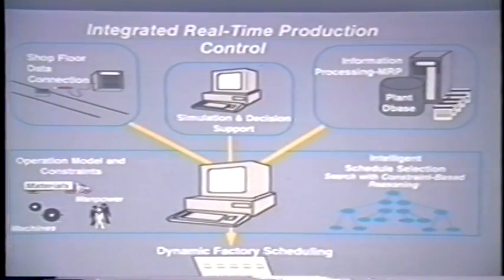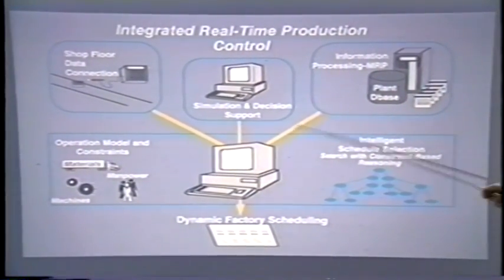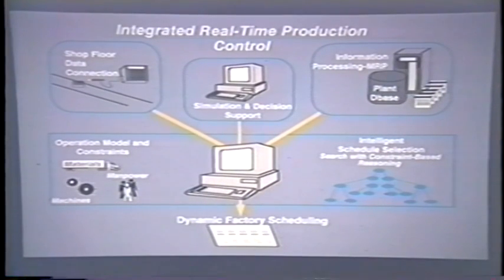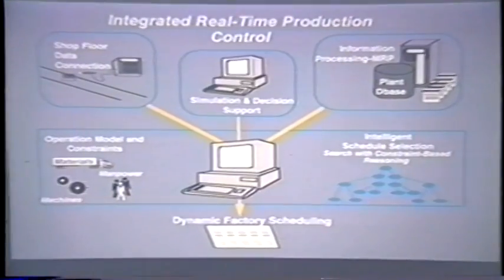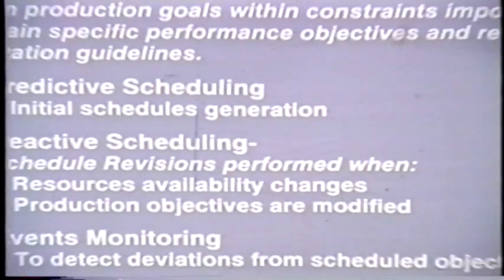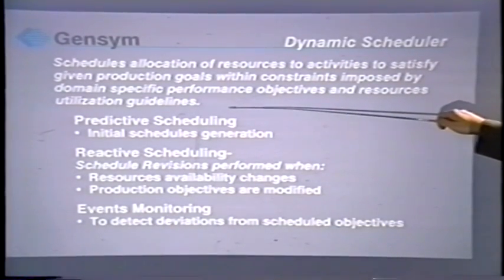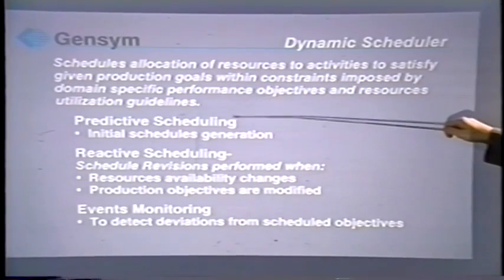Another important application for manufacturing is dynamic scheduling — tying together the MRP or information system side of a company with shop floor production control. In dynamic scheduling, the main objectives are: first, predictive scheduling to optimize use of resources and meet customer needs; second, reactive scheduling, so if a resource is taken out of operation, rescheduling can be done around that change. Also, if a new order comes in — such as a make-to-order or emergency order — production can be dynamically rescheduled to optimize again.